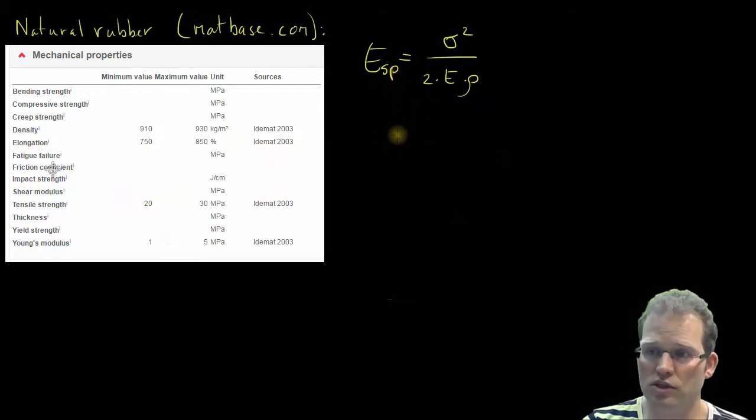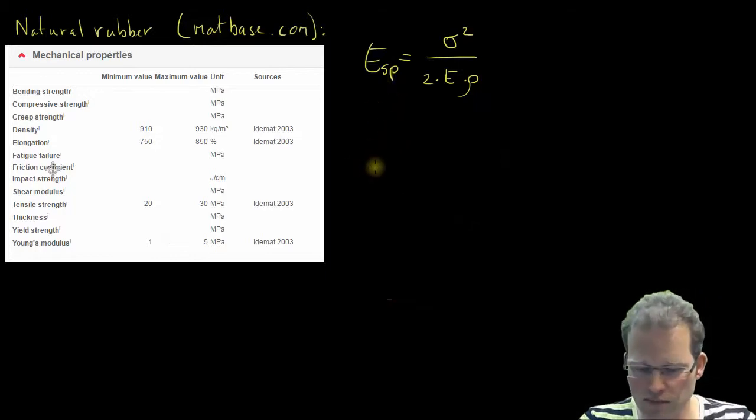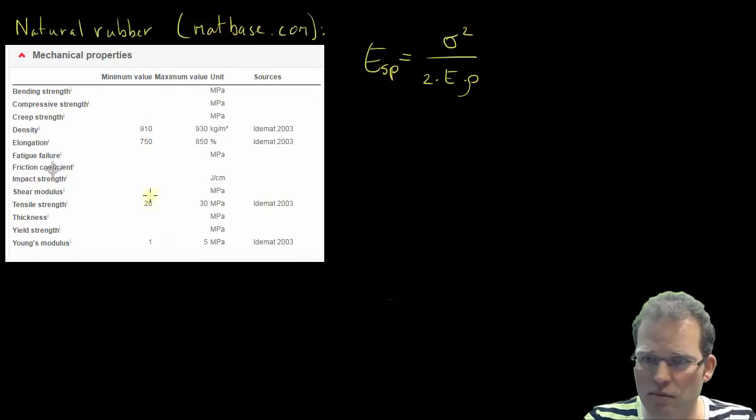So we can make an assumption of what the specific energy of natural rubber is. Let's see, if I take the numbers, I don't want to go all the way to the tensile strength. I would prefer the yield strength but rubber doesn't have a yield strength, so let's take a conservative number of 10 instead of 20 or 30. We are not stretching it to the limit, we stretch it to somewhere where I believe this natural rubber you can do over and over again.